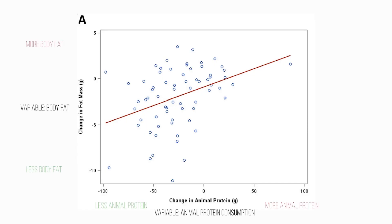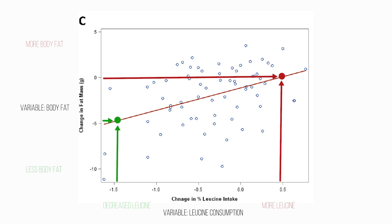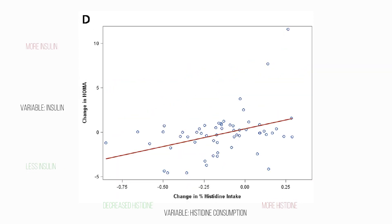Looking at figure 3a, they examine associations between different variables. What they find is that with decreases in animal protein, you see decreases in fat mass — and that is what they found with the vegan group. On the other hand, an increase in plant protein is associated with lower fat mass, the opposite of what we see with animal proteins. They also looked at the amino acid leucine: with a decrease in leucine content, you see decreases in fat mass. Finally, figure 3d looks at histidine — as histidine decreases, you see decreases in blood sugar, looking back at that HOMA marker.